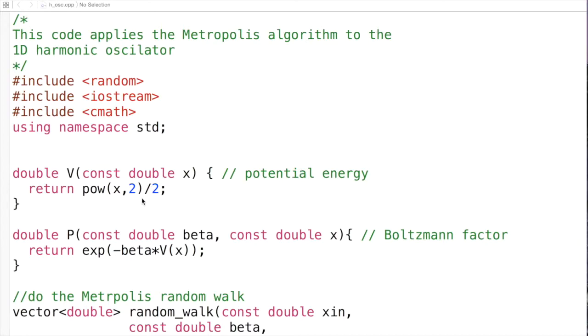We then first define two trivial functions, one that calculates the potential energy given x, which of course is nothing more than x squared over 2, which is what we do over there.